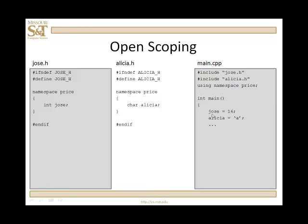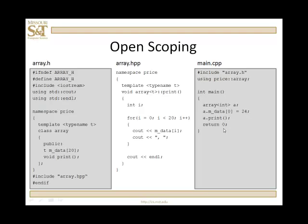Open scoping is a really nice aspect of C++. Consider two header files, jose.h and alicia.h. In jose.h, I have namespace price containing an int named jose. In alicia.h, also within namespace price, there is a character variable called alicia. Then in main, if I pound-include both jose.h and alicia.h and state 'using namespace price', when I refer to jose or alicia, the compiler knows what those variables are and where they come from.